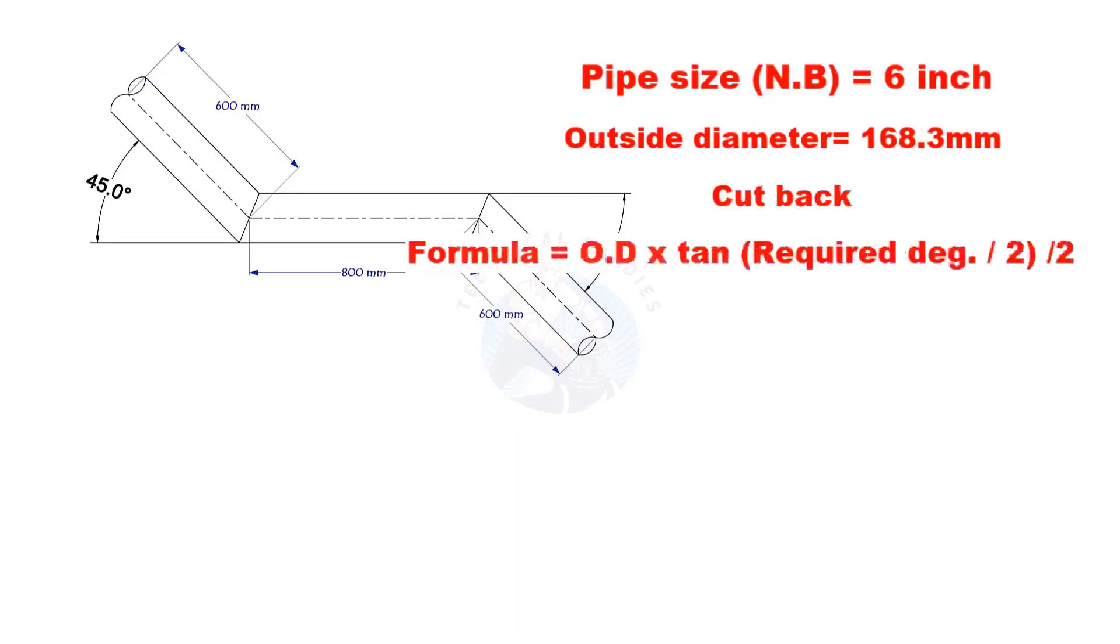Cutback is O D multiplied by tan half degree divided by 2. Here, the required degree is 45. Half of 45 is 22.5.